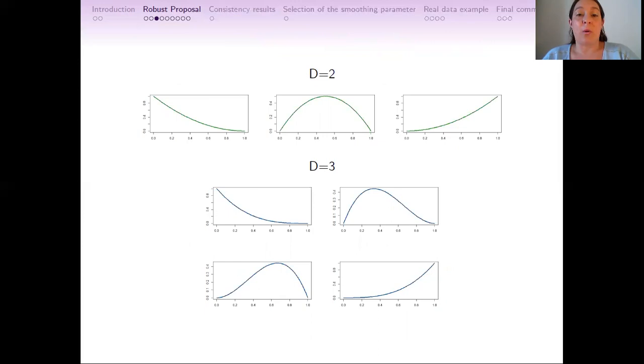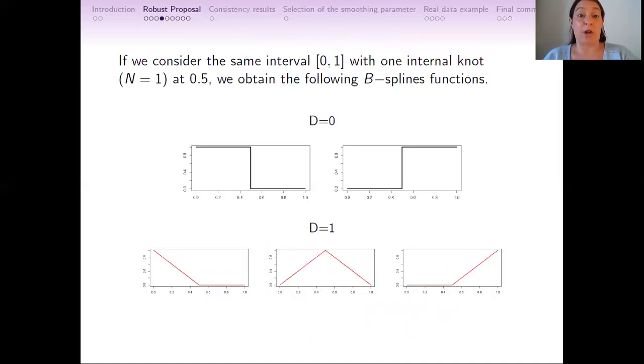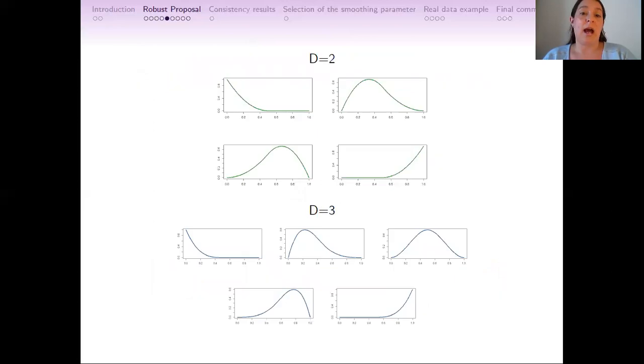When we add also one internal knot at 0.5, we have D plus 2 elements in the B-spline basis. That's why when D equals 0, we have two B-spline functions. When D equals 1, we have three B-spline functions, and so on. When D equals 3, the B-splines are also called cubic splines.